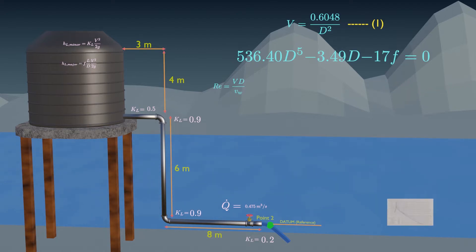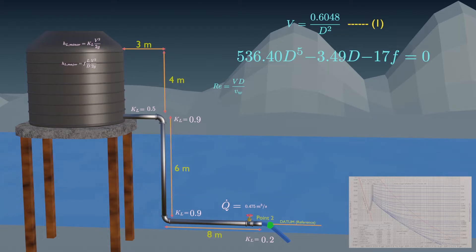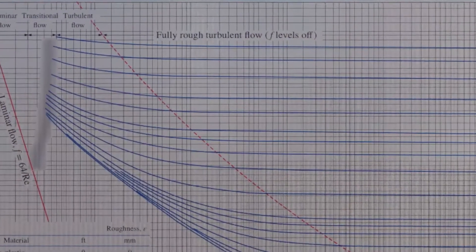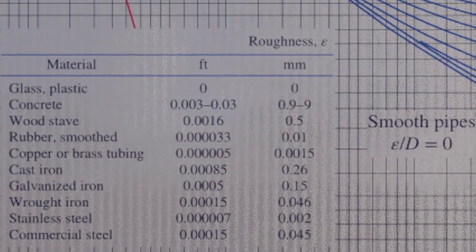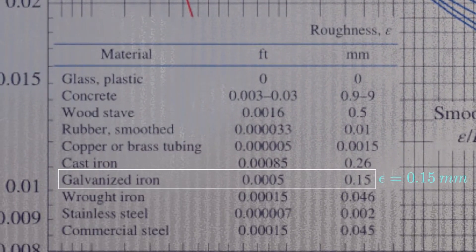For turbulent flow, we need our Moody chart. So, first get the surface roughness for galvanized iron pipe from your data book.